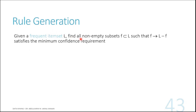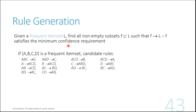When it comes to rule generation, given a frequent itemset L, find all non-empty subsets F such that F can lead to L minus F. This means any items you include on the left-hand side cannot show up on the right-hand side. For example, you cannot have 'cook leads to cook.' The rule must also satisfy the minimum confidence. So from one itemset ABCD you can generate all rules such as ABC→D, ABD→C, ACD→B, BCD→A, and so forth.